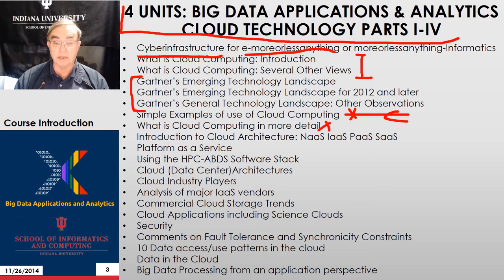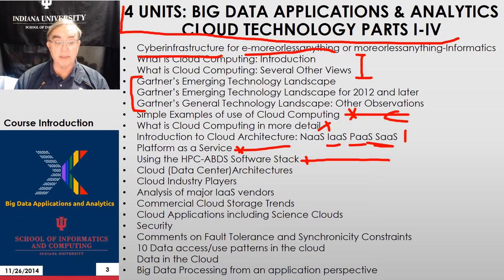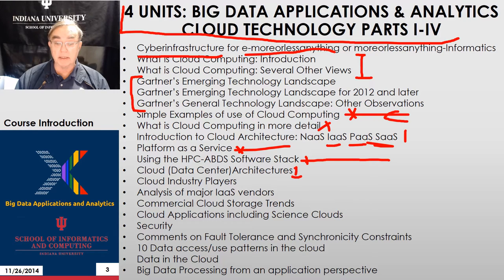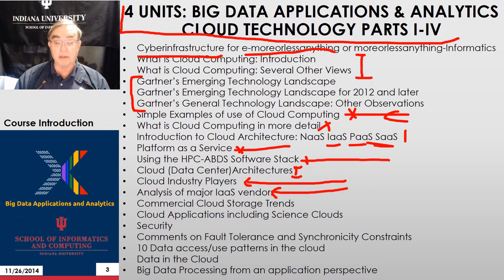We look at cloud computing in more detail, focusing on cloud architecture: network as a service, infrastructure as a service, platform as a service, and software as a service. We go through platform as a service in more depth. Then we have a long discussion of the HPC-ABBS — the Apache Big Data Stack — which provides a software stack with around 300 components that describes how big data is processed. We cover cloud architectures and data center architectures, including the major players in the field. Then a Gartner analysis goes through major infrastructure-as-a-service vendors, and we examine four in detail: Amazon, the dominant force, Microsoft, Google, and Rackspace.